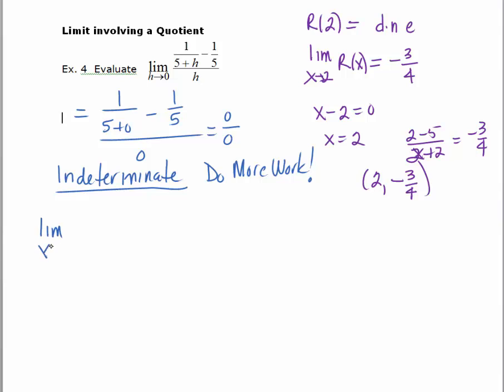We've got the limit as h approaches 0 of 1 over 5 plus h. I'm going to leave a little room because what I am going to do is some algebraic manipulation. This is a complex fraction and I want to simplify it by combining the numerator and the denominator into one fraction and then multiplying by the reciprocal. That's one strategy. The other strategy would be to multiply all terms in the numerator and the denominator by the LCD. You can use whichever method you'd like. I'm going to combine the numerator into one fraction. So I multiply by 5 over 5. I'll multiply this fraction by 5 plus h over 5 plus h. I'm going to simplify.